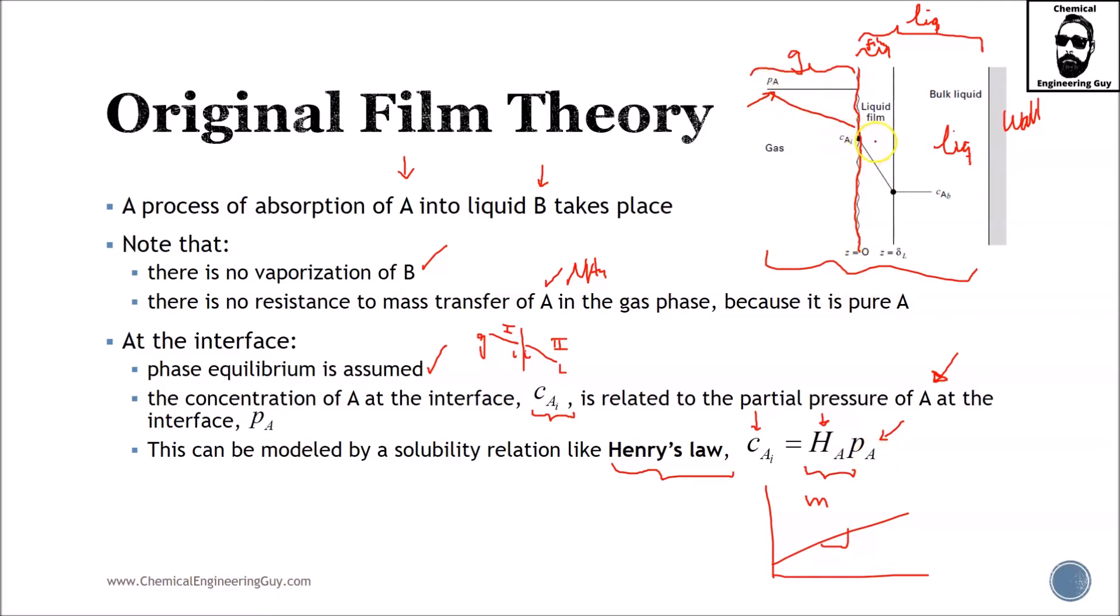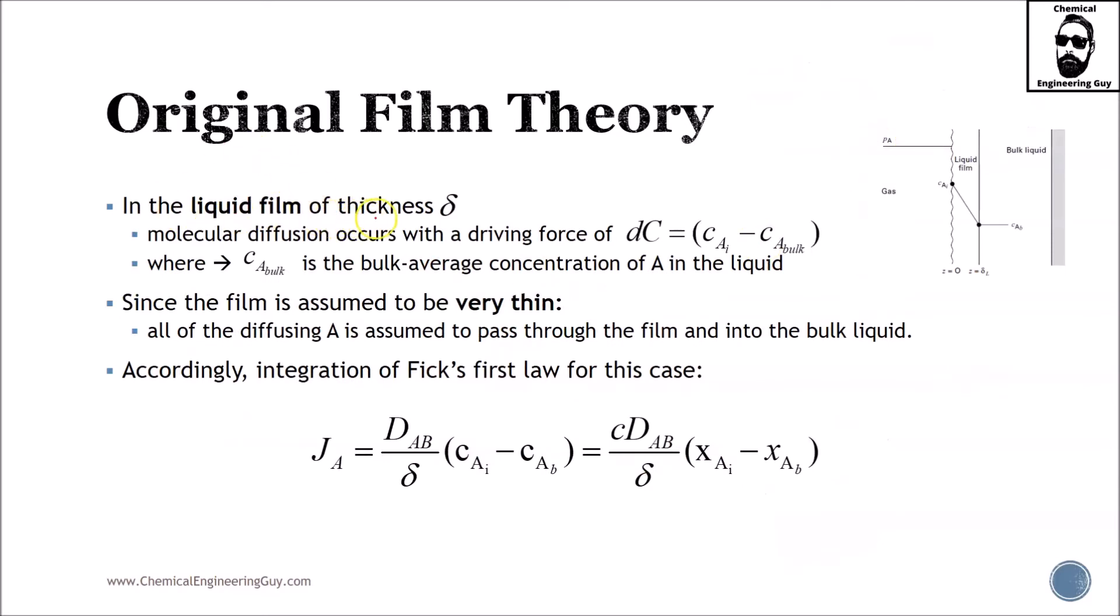In the liquid film of thickness delta, if you wanted to account for the whole liquid length it would be L, but in reality we have delta. The bulk phase will be L minus delta. It's important to see that the origin starts in the interface.